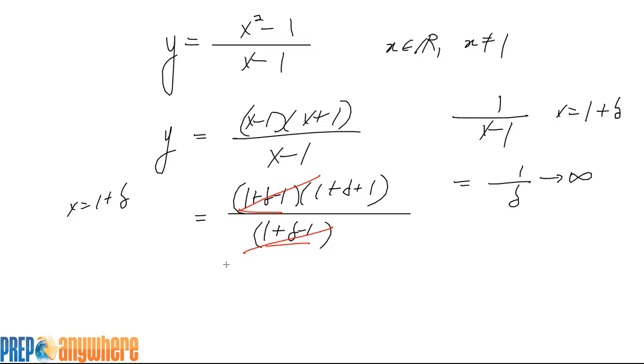What is it going to approach as delta gets really small? It's actually going to approach 2.